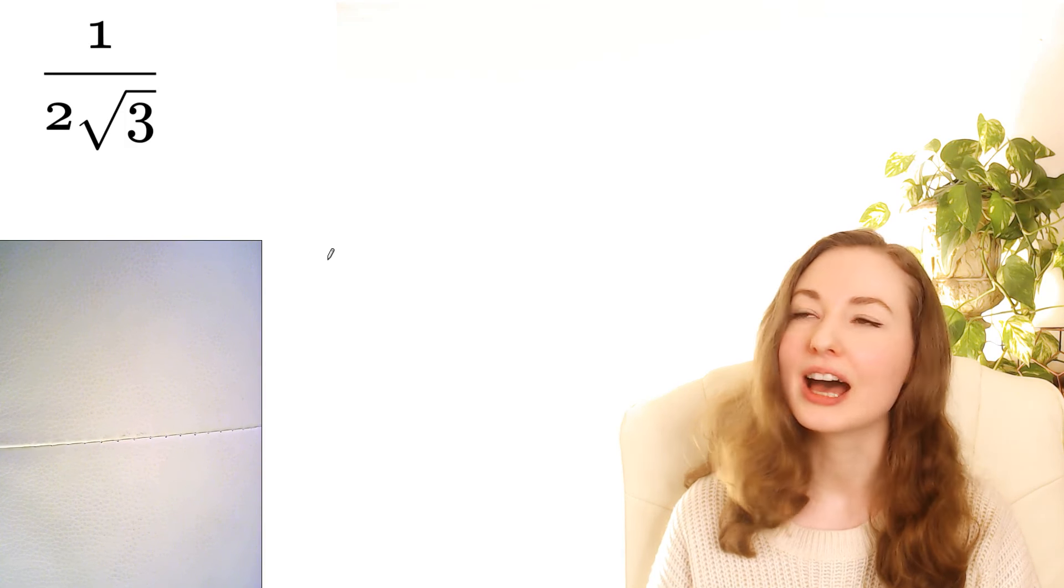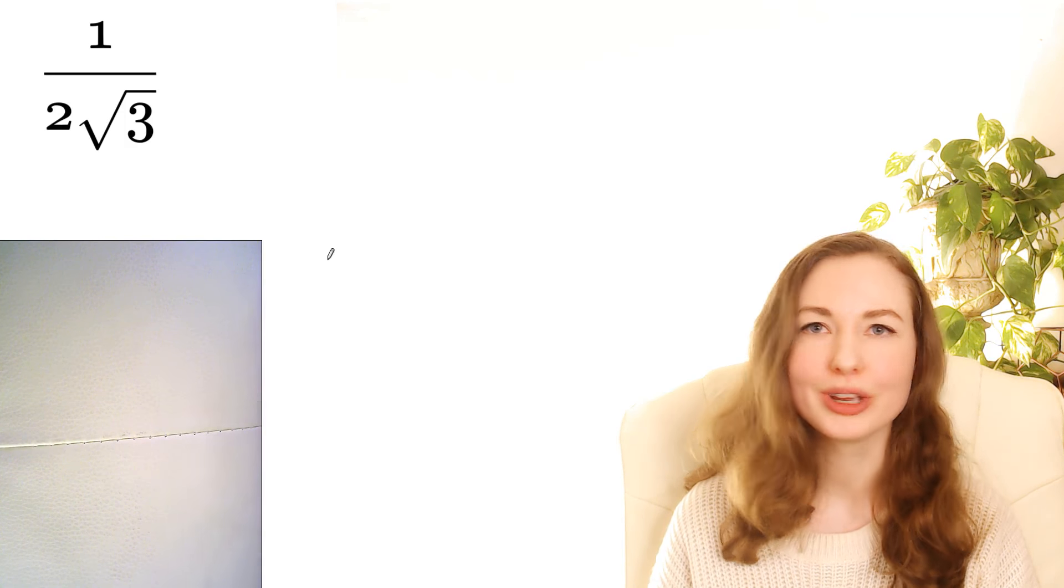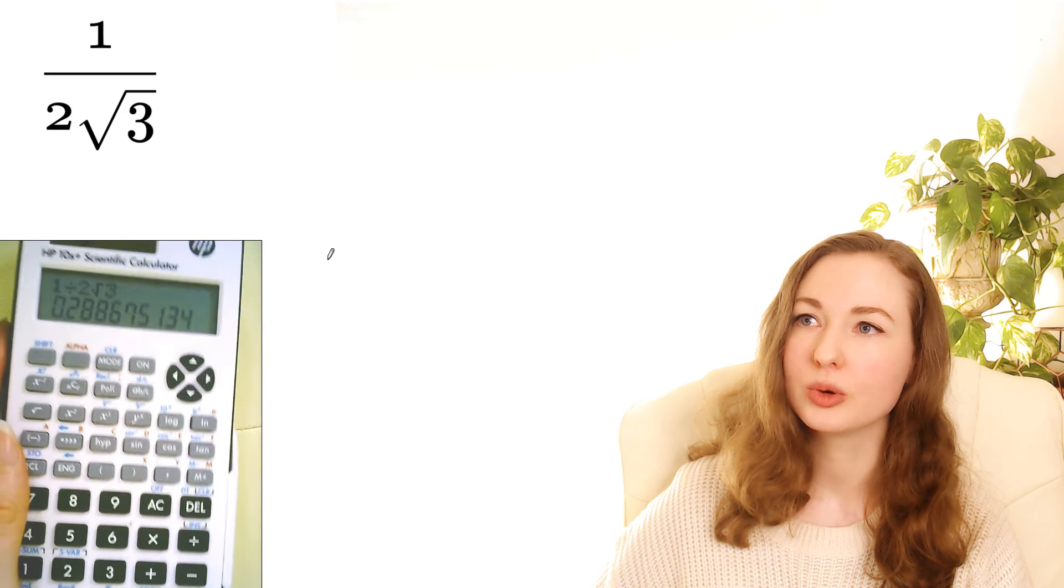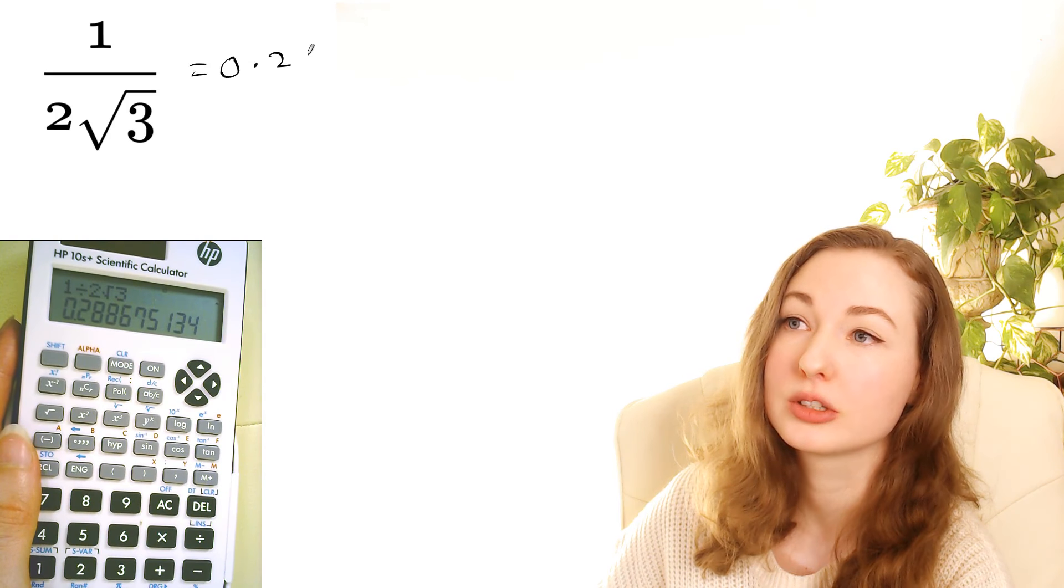Let's suppose you're in an exam and you need to calculate 1 over 2 root 3. You're used to putting this into your trusty calculator as 1 divided by 2 root 3 like that. Hit equals and you would get the correct answer of 0.29.